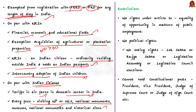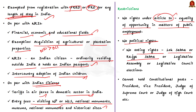What OCI card holders cannot enjoy: firstly, they shall not be entitled to the rights conferred on Indian citizens under Article 16 of the constitution, which is with regard to equality of opportunity in matters of public employment. Secondly, they do not have political rights — for example, they do not have voting rights for Lok Sabha, Rajya Sabha, Legislative Assembly, or Legislative Council elections. Thirdly, they cannot hold constitutional posts such as President, Vice President, or judges of the Supreme Court or High Court.